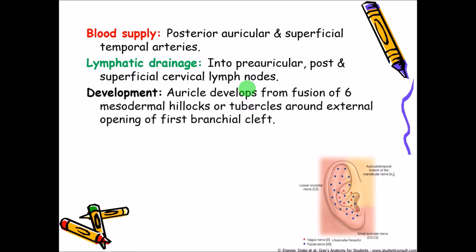Coming to the development of the auricle itself: the auricle develops from the fusion of six mesodermal hillocks or tubercles around the external opening of the first branchial or pharyngeal cleft. There will be small mesodermal hillocks or tubercles and they all join together to form the pinna or the auricle. This will be dealt with in detail when we discuss the development of the ear.